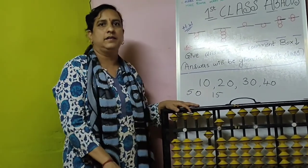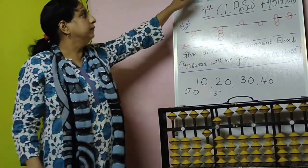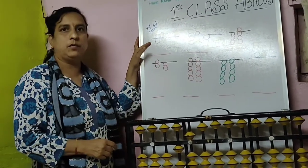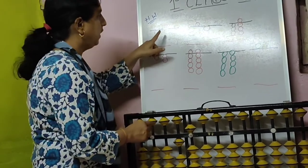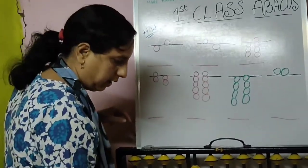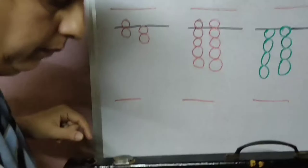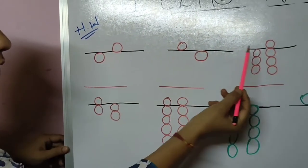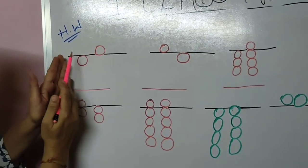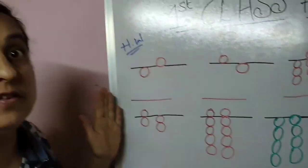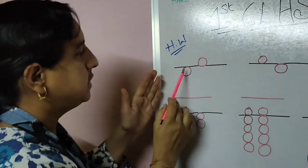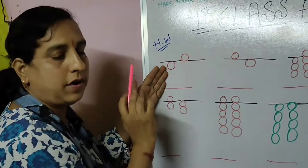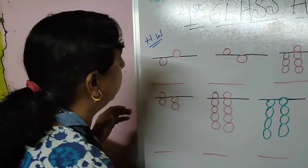Okay bachho, abhi double digit aapko sikhha humgi — kis tarah padhna hai. So this side is the unit point. Dekho bachho — this is unit point, isn't it? Unit point yaha pe hai. Unit point — left hand side jo rod rahega, woh tens rod raha. So this is tens — in tens rod what number is there? One is there, and in unit rod it is five. So how to write this — like this.